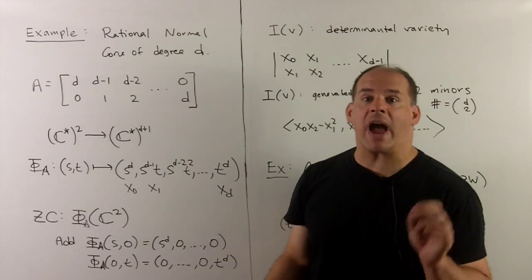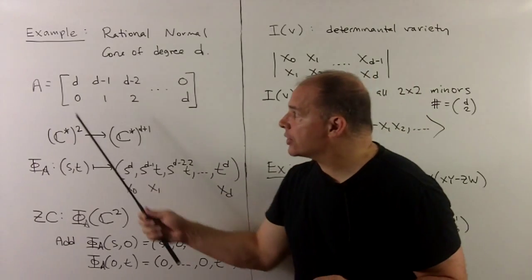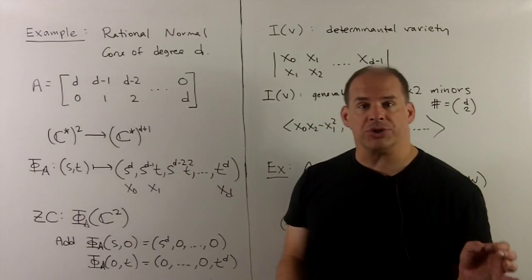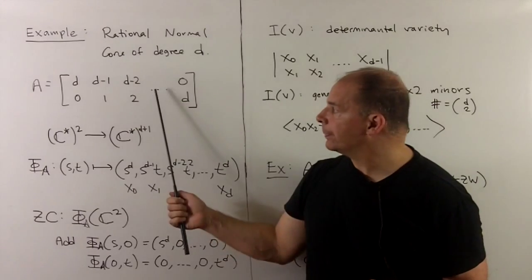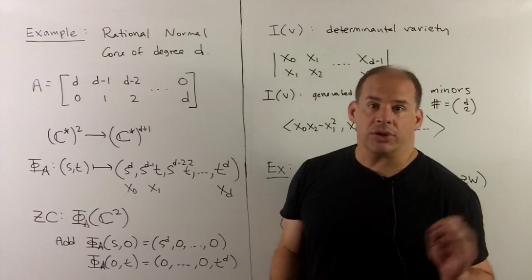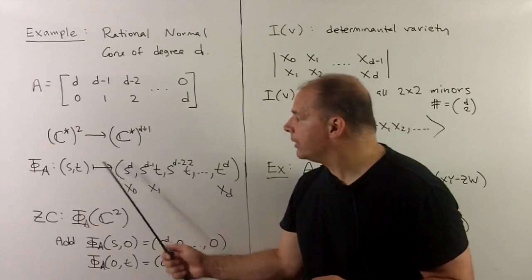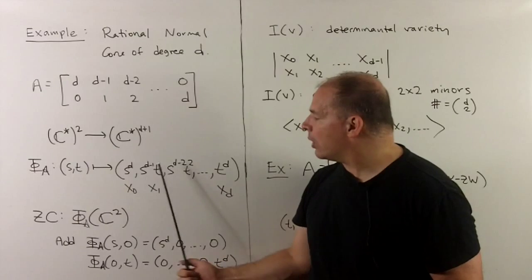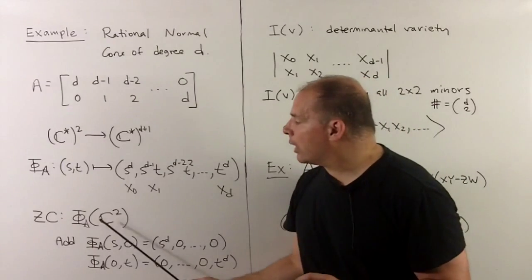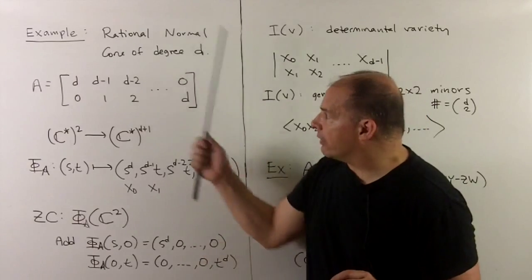For a class of interesting examples, we have the rational normal cone of degree D, where D is some positive integer. For the A matrix, the first row is D, D−1, D−2, all the way down to 0, and the second row reverses the order, starting at 0 up to D. A check: adding down any column gives D. This gives a map from C*^2 into C*^{D+1}: φ_A carries (S,T) to (S^D, S^{D−1}T, …, T^D). When we take the Zariski closure, we extend φ_A to C^2.